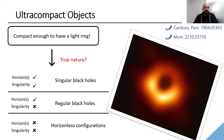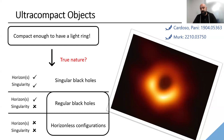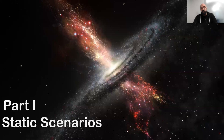The third case is horizonless configurations — objects without horizons or singularities. They're not perfect either; they have a stable inner light ring that creates accumulation of light and instabilities. During this talk I will mainly focus on regular black holes and horizonless configurations, for two reasons: we expect objects without singularities in nature, and I can conveniently parameterize both types using a single parameter via one metric function f(r).